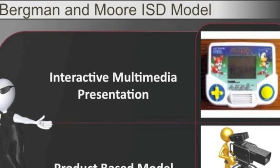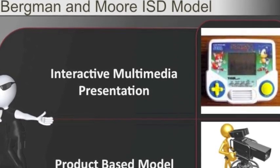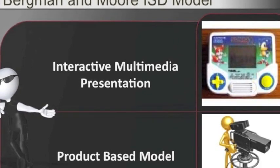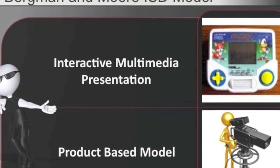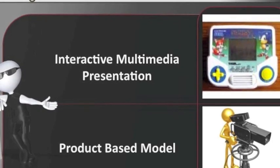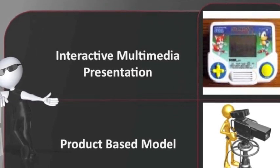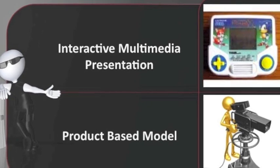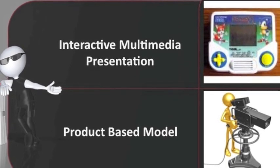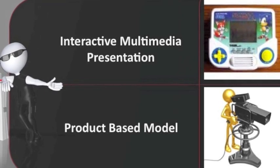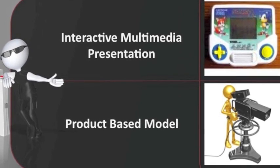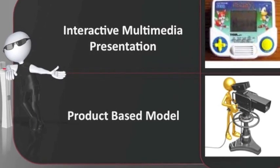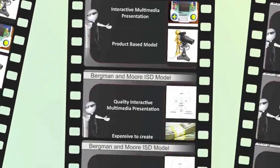The Bergman & Moore Instructional Design Model is a unique instructional model emphasizing the development of interactive multimedia products. Due to the model's specialization, key analysis components found in other instructional design models are less important here. When the Bergman & Moore Model is utilized, an analysis has already been conducted and a decision has been made that resulted in the need for an interactive media product. For this reason, the Bergman & Moore Model is classified under the product-based models.